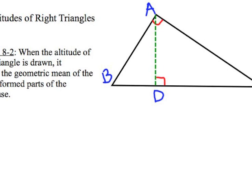Theorem 8-2: When the altitude of a right triangle is drawn, it becomes the geometric mean of the two newly formed parts of the hypotenuse. Alright, let's see what that means.